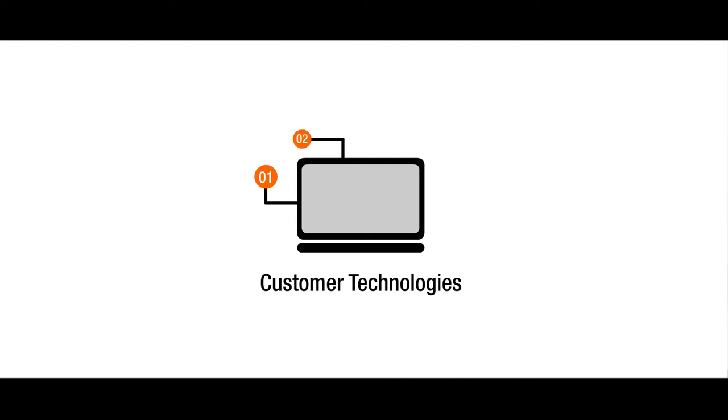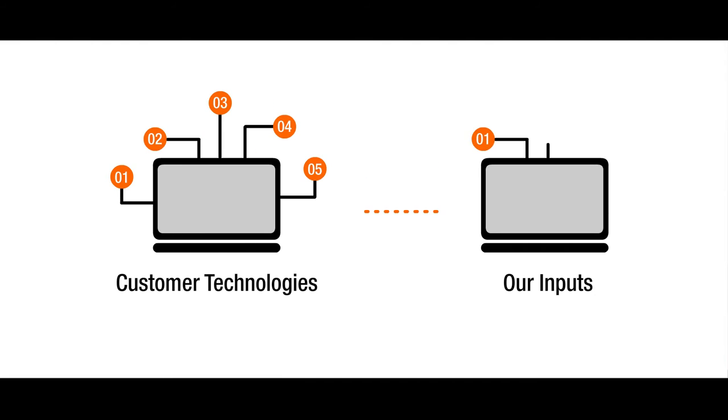Once this is done, we start implementation of the framework. The customer suggests some technologies and then we also give our inputs depending on our experience. We decide upon five or six candidate technologies for the product, do POCs on all of them, create a comparison chart, and then give our proposal to the client on which technologies we should be using.